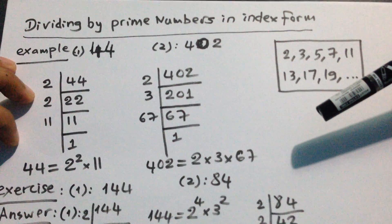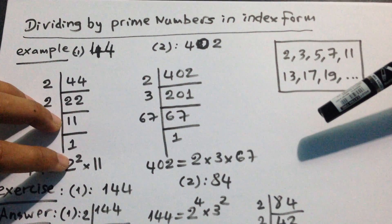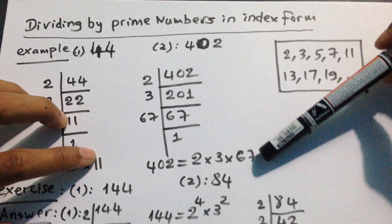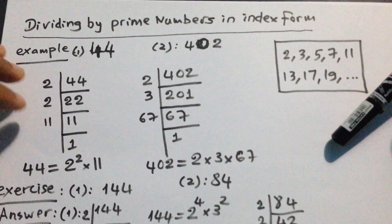So we can write in index form: 44 equals 2 squared times 11. 402 equals 2 times 3 times 67.